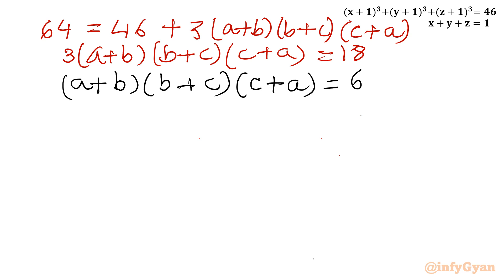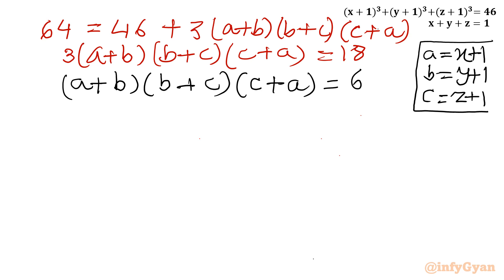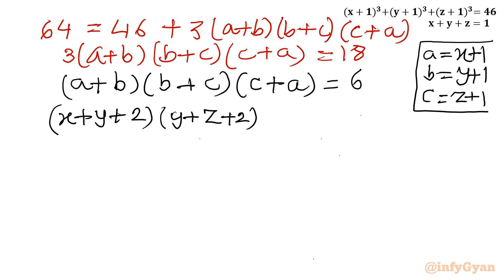Now let us put back the values of a, b, and c: a was x plus 1, b was y plus 1, c was z plus 1. Substituting back, we get x plus y plus 2, times y plus z plus 2, times z plus x plus 2, equal to 6.